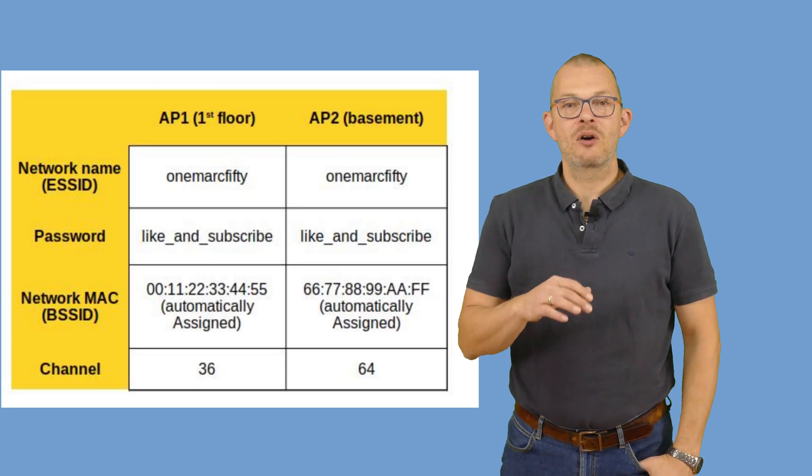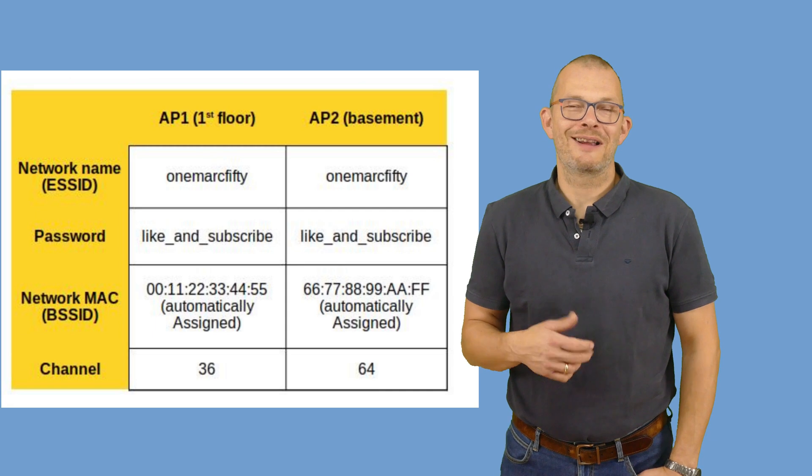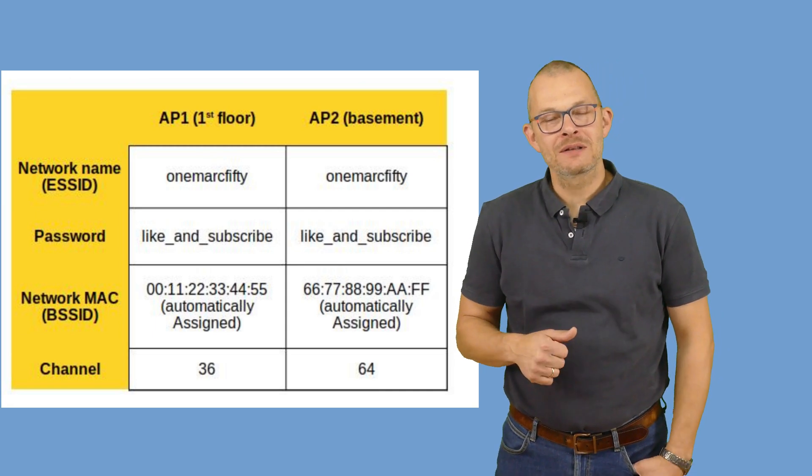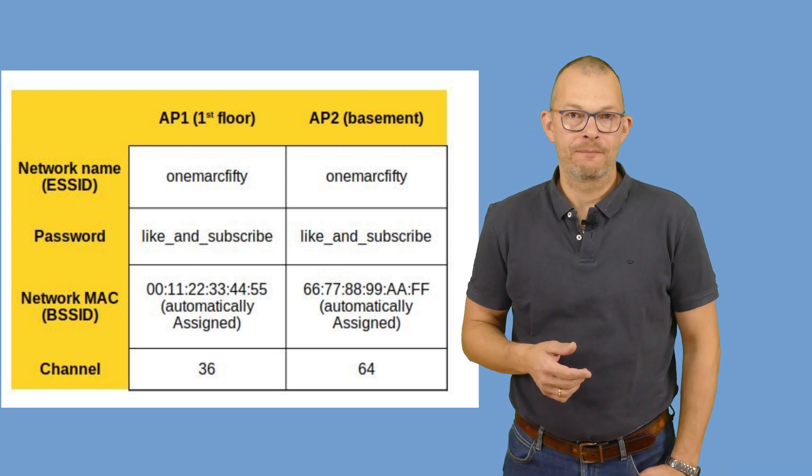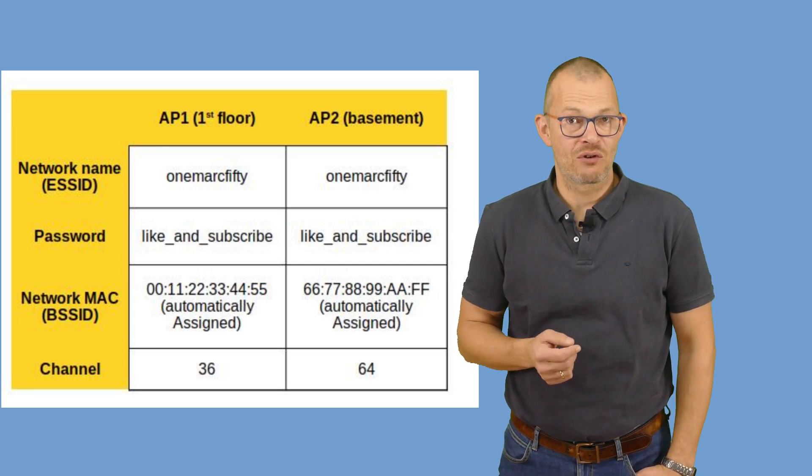In this example I call both networks 1mark 50 with a password of like and subscribe – just a little hint. The Wi-Fi on the first floor is on channel 36, the one in the basement is on channel 64. The BSSID has been assigned automatically – I do not have to worry about that.